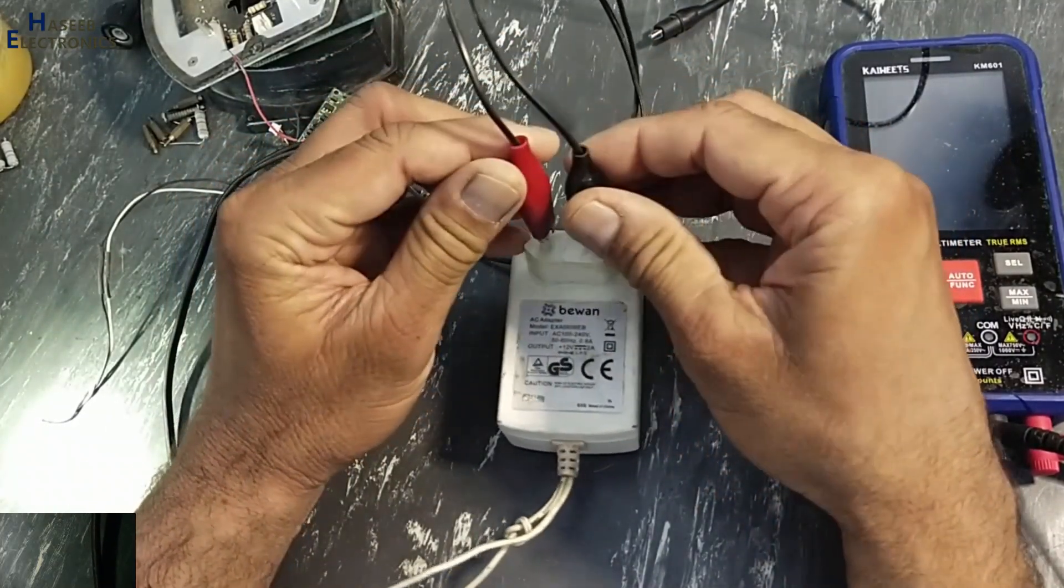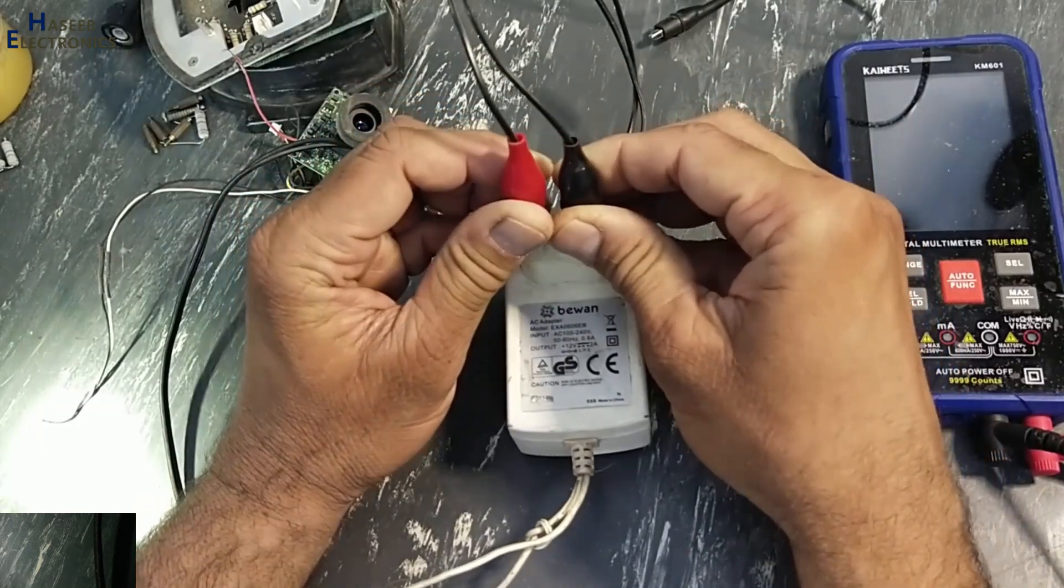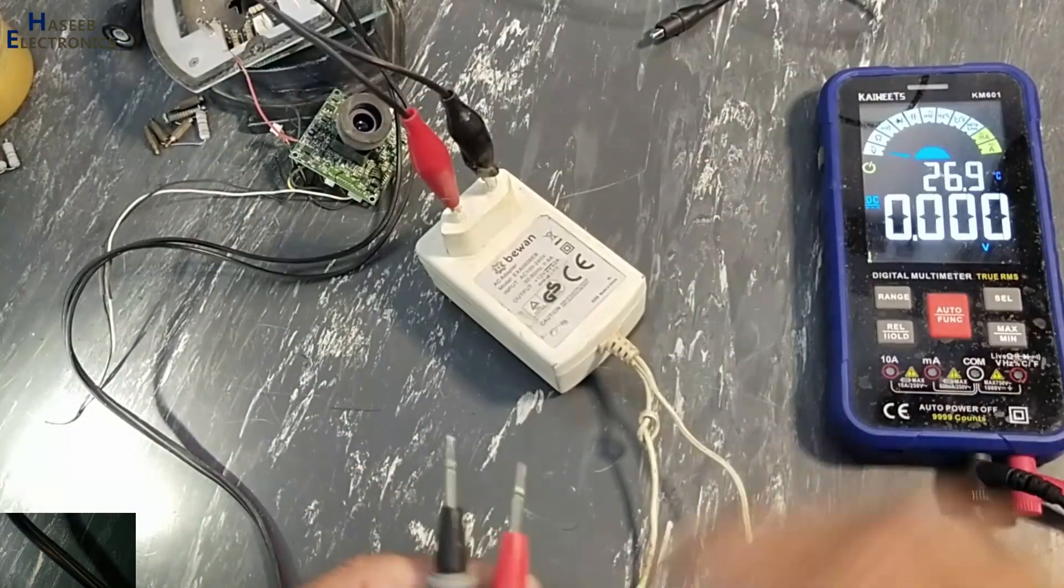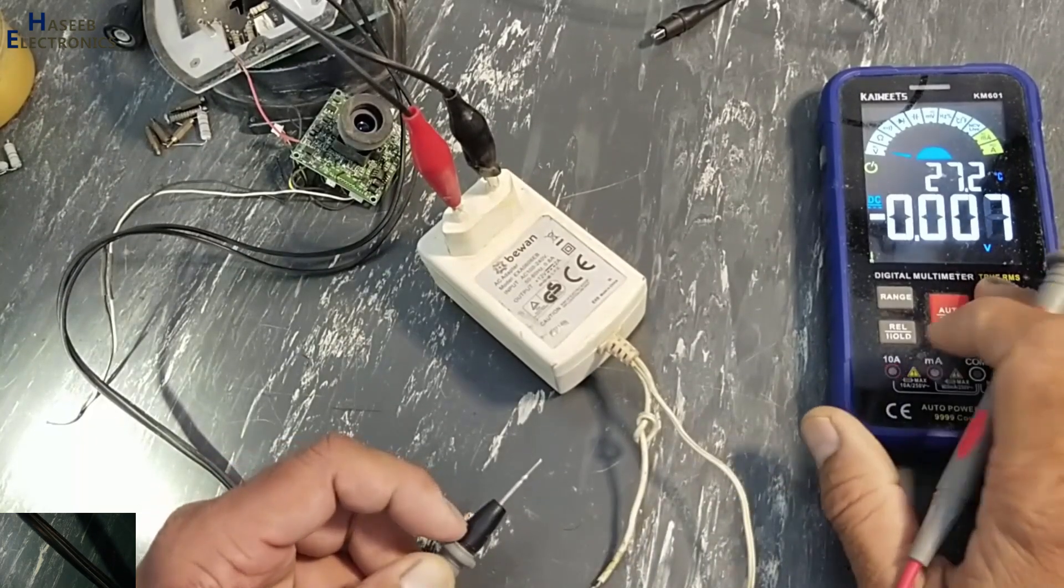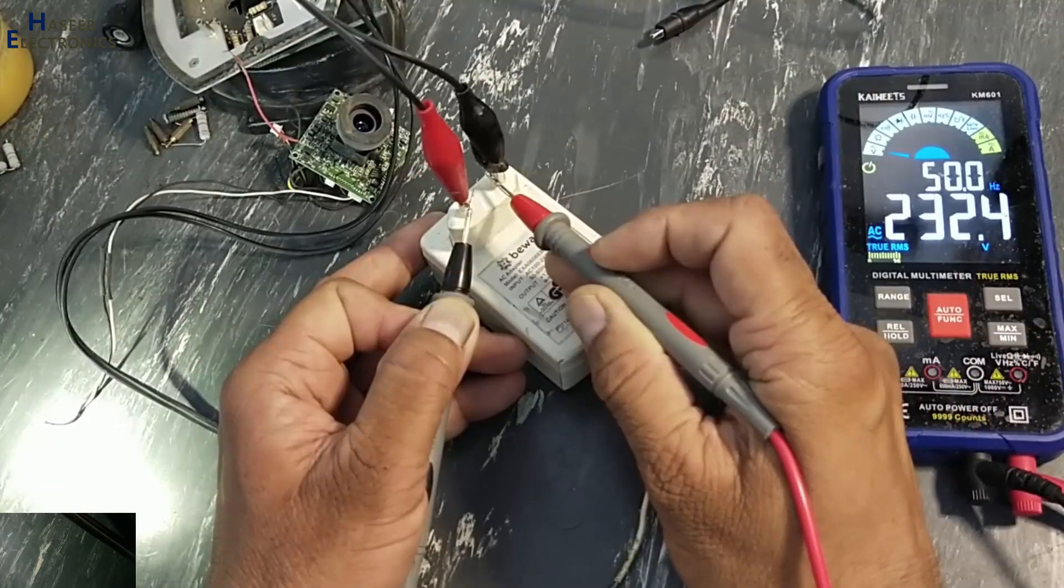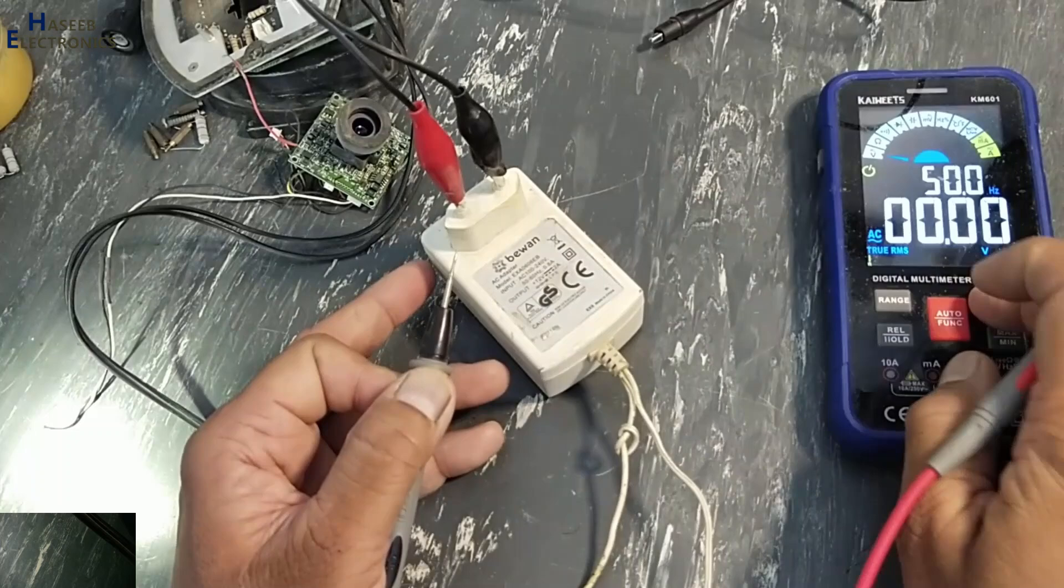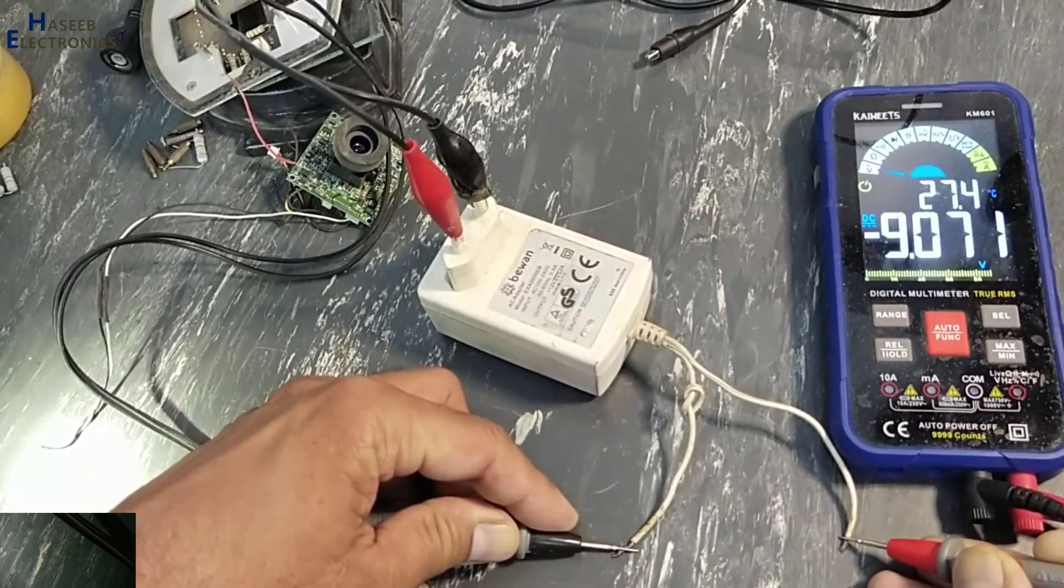Because here are live voltage, always take care for the safety. I will apply 220 volt using series lamp. DC voltage 9 volt. Input voltage 232 volt, but output 9 volt.